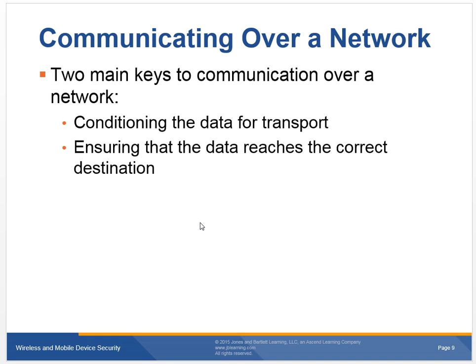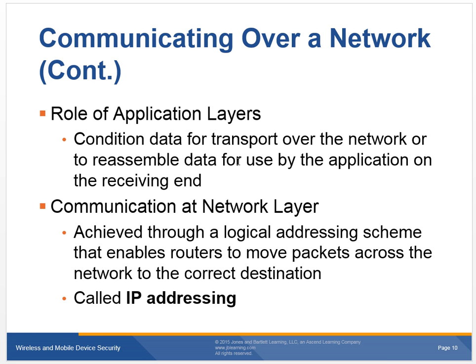So how do we talk over a network? The two main communications are conditioning the data and then ensuring the data reaches the correct destination — getting the data put together and then the addressing or delivery of it. Think of it like going to the grocery store: you pick up individual items, put them in your cart, they end up in a bag, the bag is transported to your house, and then it's disassembled onto your counter. The same thing happens on a network — we take the individual pieces, format them, break them apart, send them across the network, and at the other end they're put back together.